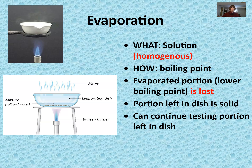The first technique is evaporation, used on a homogeneous mixture or solution. It works based on the different boiling points of the components. A classic example is salt water. You use an evaporating dish — placed on a ring stand over a Bunsen burner. You have your salt water in the dish and you're using the different boiling points of the solvent and solute to separate them. Water has a different boiling point than salt.